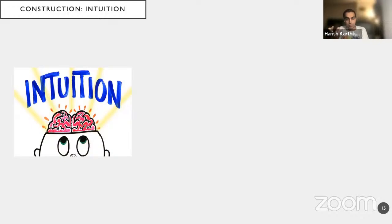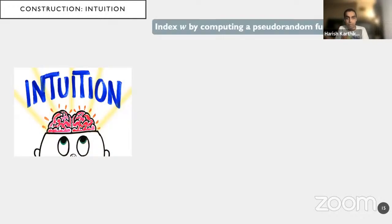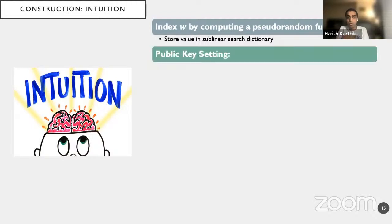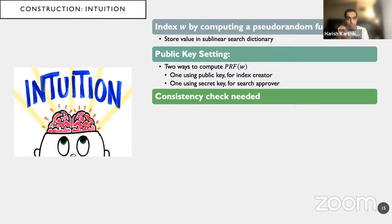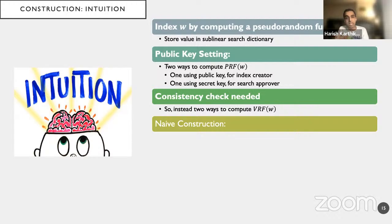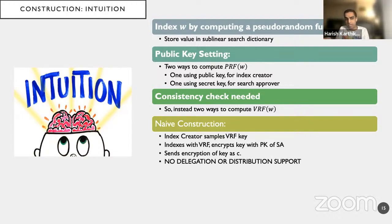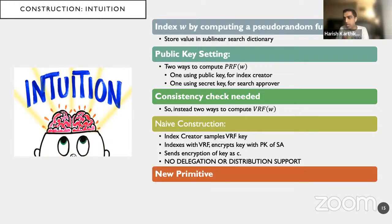How do we build this construction? We index a keyword W by computing a pseudorandom function on W, storing this value in a sublinear search dictionary. But in a public key setting, we need two different ways to compute VRF: one using the public key for the index creator, and one using the secret key for the search approver. We also want consistency checks, so we throw in a VRF. A naive construction samples a VRF key, indexes with it, and encrypts the VRF key with the public key. But this does not support delegation and distribution, which are features we want.